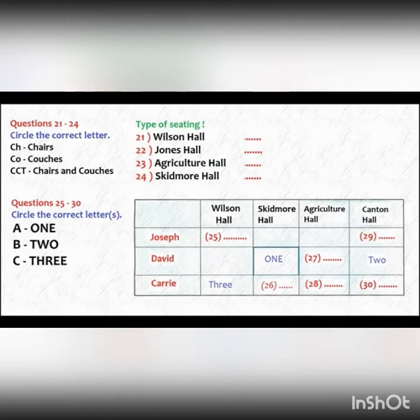In the second part of the discussion, David, Joseph, and Carrie continue talking about conducting a survey. Before you hear the rest of the talk, you have some time to look at questions 25 to 30.